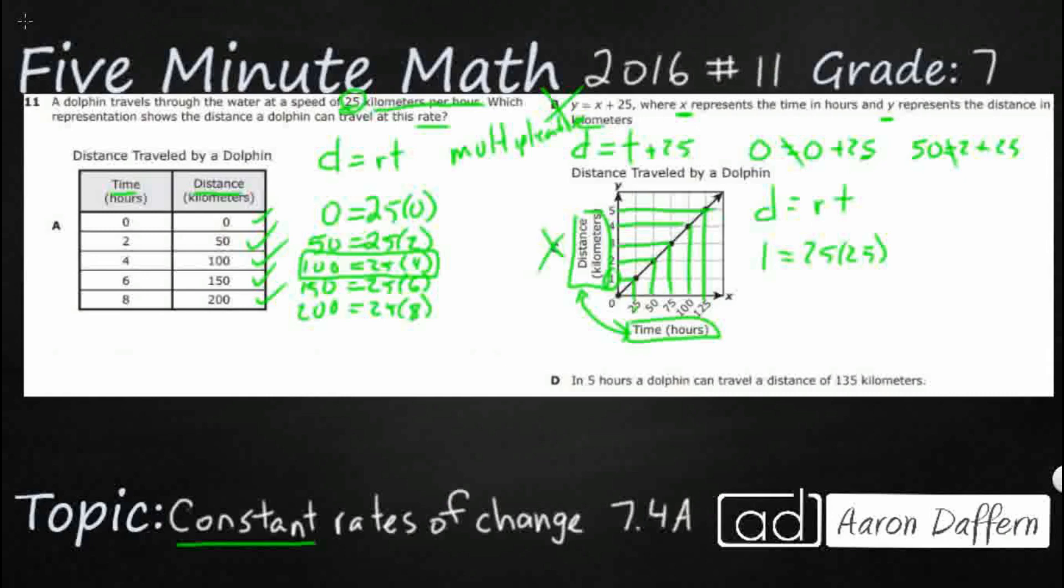And then in five hours, a dolphin can travel 135. Well, that doesn't help us with any other items. That only helps us with five hours. And actually, no. Five times 25 is 125, not 135. So D is just patently wrong. So our answer here is A.